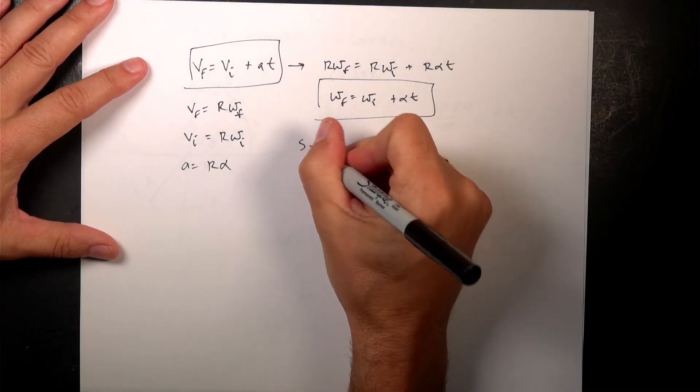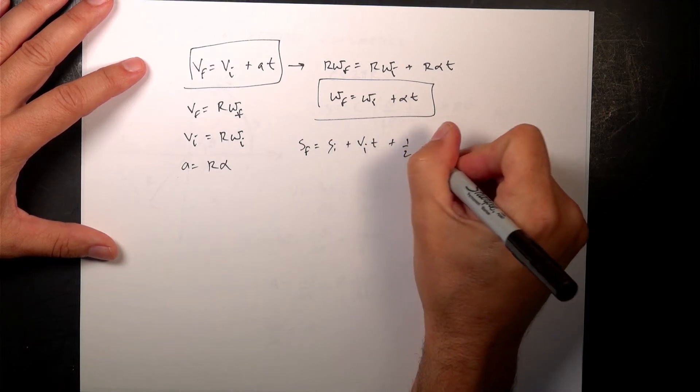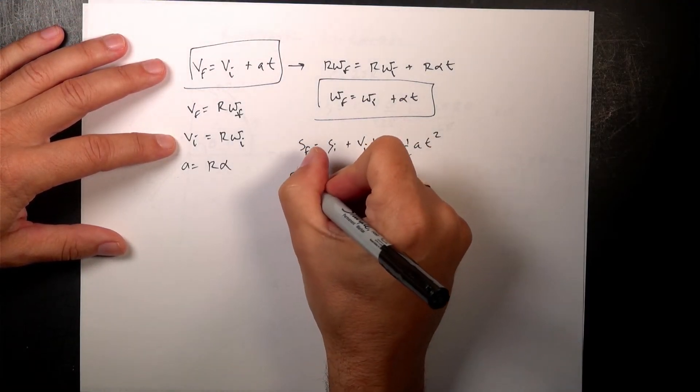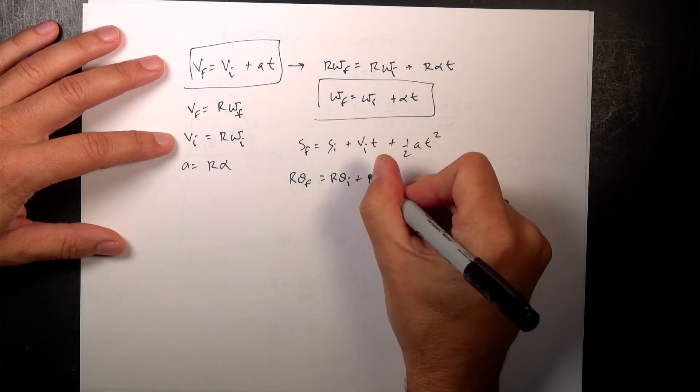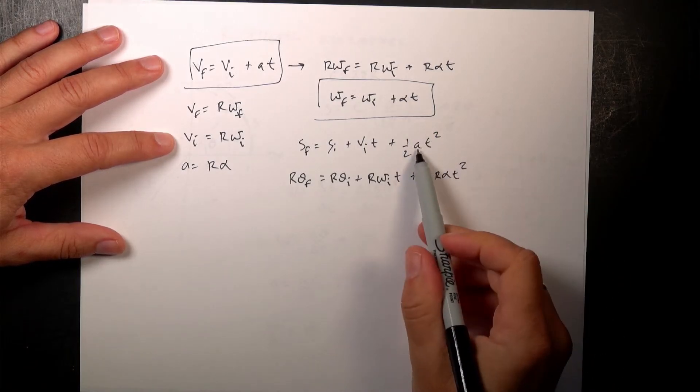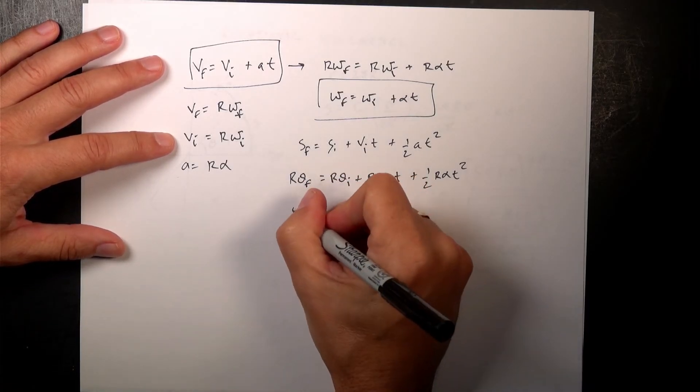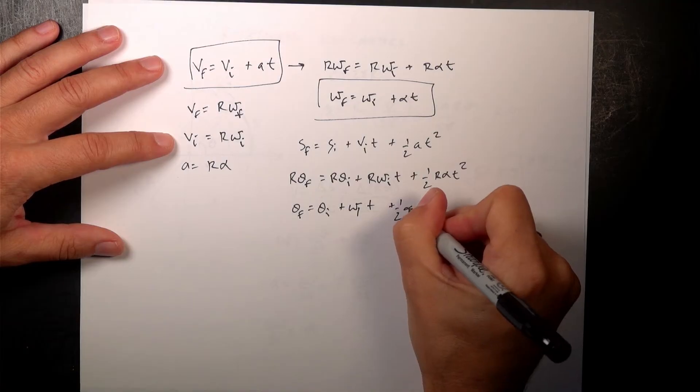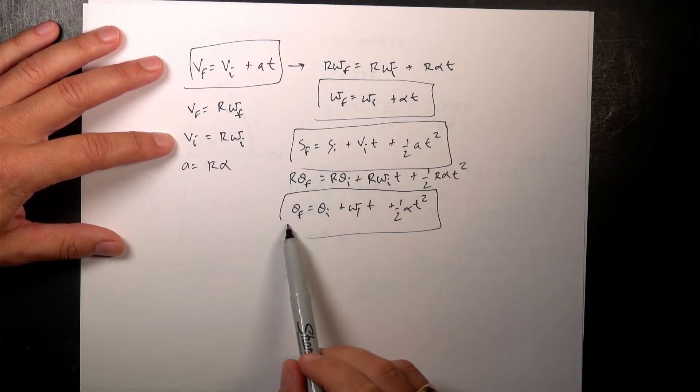I can do the same thing for the position. s final equals s initial plus v initial t plus 1 half a t squared. That's another kinematic equation. And if I put in s equals r theta final equals r theta initial. That's just s plus v is going to be r omega initial t plus 1 half r alpha t squared. So I just replaced all these with their equations that relate them to the angular velocity. Again, the r's all cancel. So I get theta final equals theta initial plus omega initial t plus 1 half alpha t squared. And that looks just like this other kinematic equation. But instead of positions, we have angular positions.